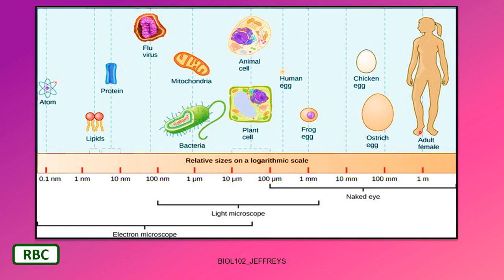An adult female is about a meter and a half tall. A frog egg is one millimeter — that's one thousandth of a meter. A human egg is much smaller, about 30 micrometers. One micrometer is one millionth of a meter. A typical plant or animal cell is somewhere between 10 and 100 micrometers, with an average of maybe 40 to 50. A red blood cell is about seven micrometers in diameter.